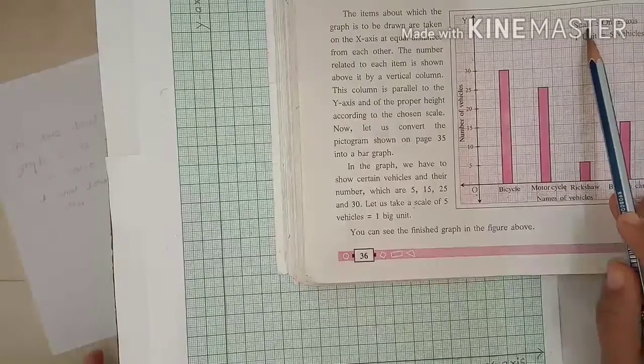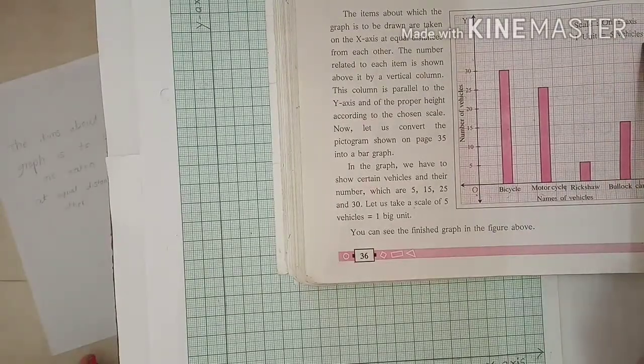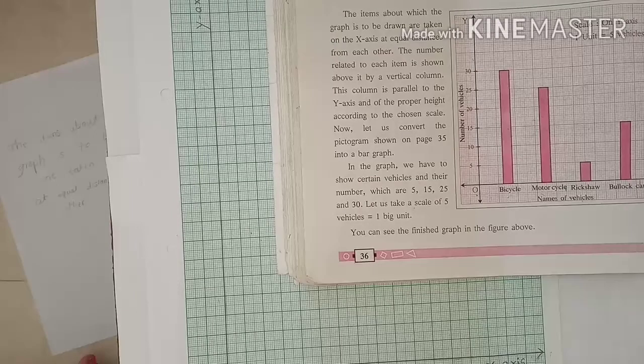The scale is given on y-axis: one unit is equal to five vehicles.